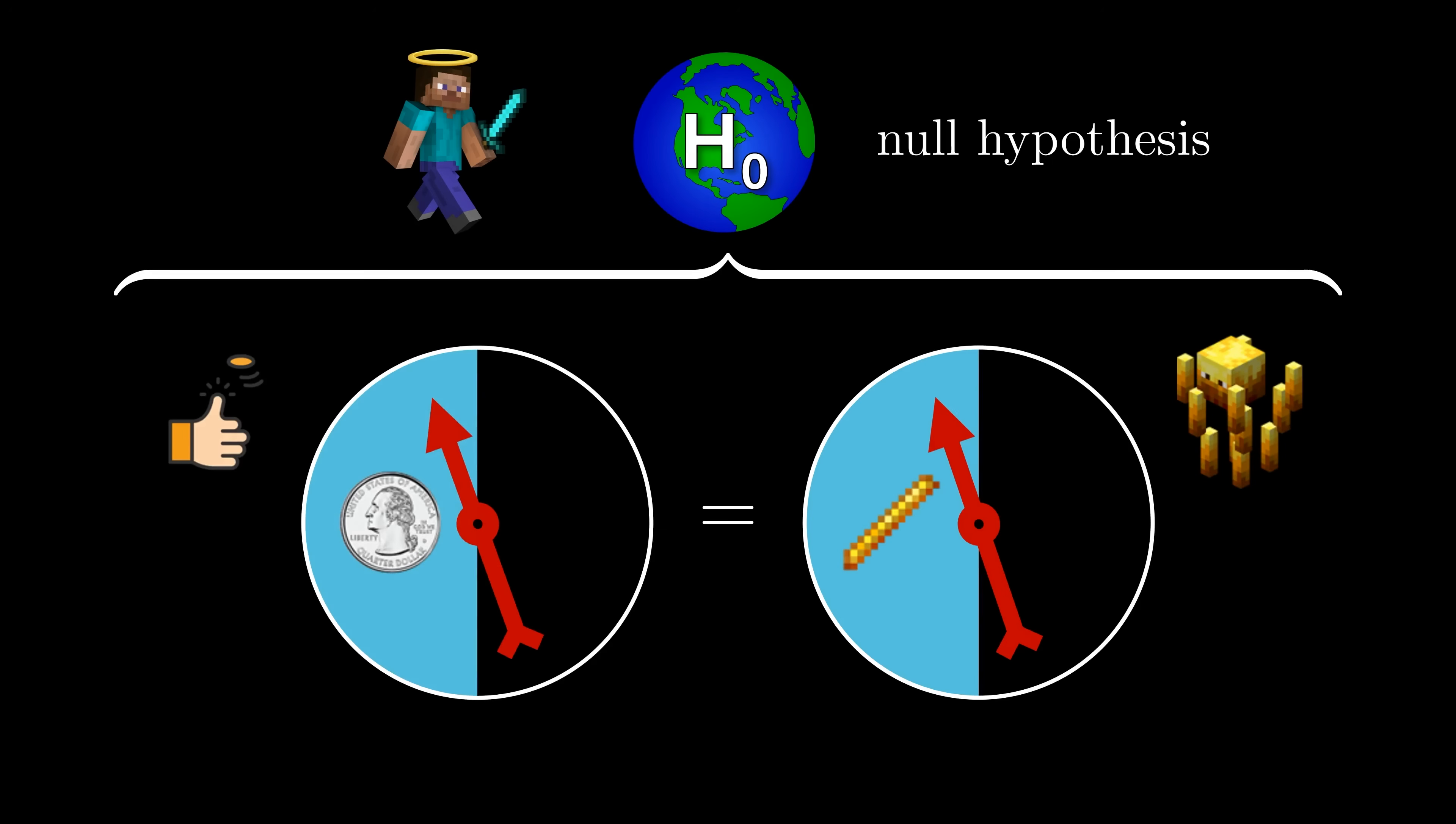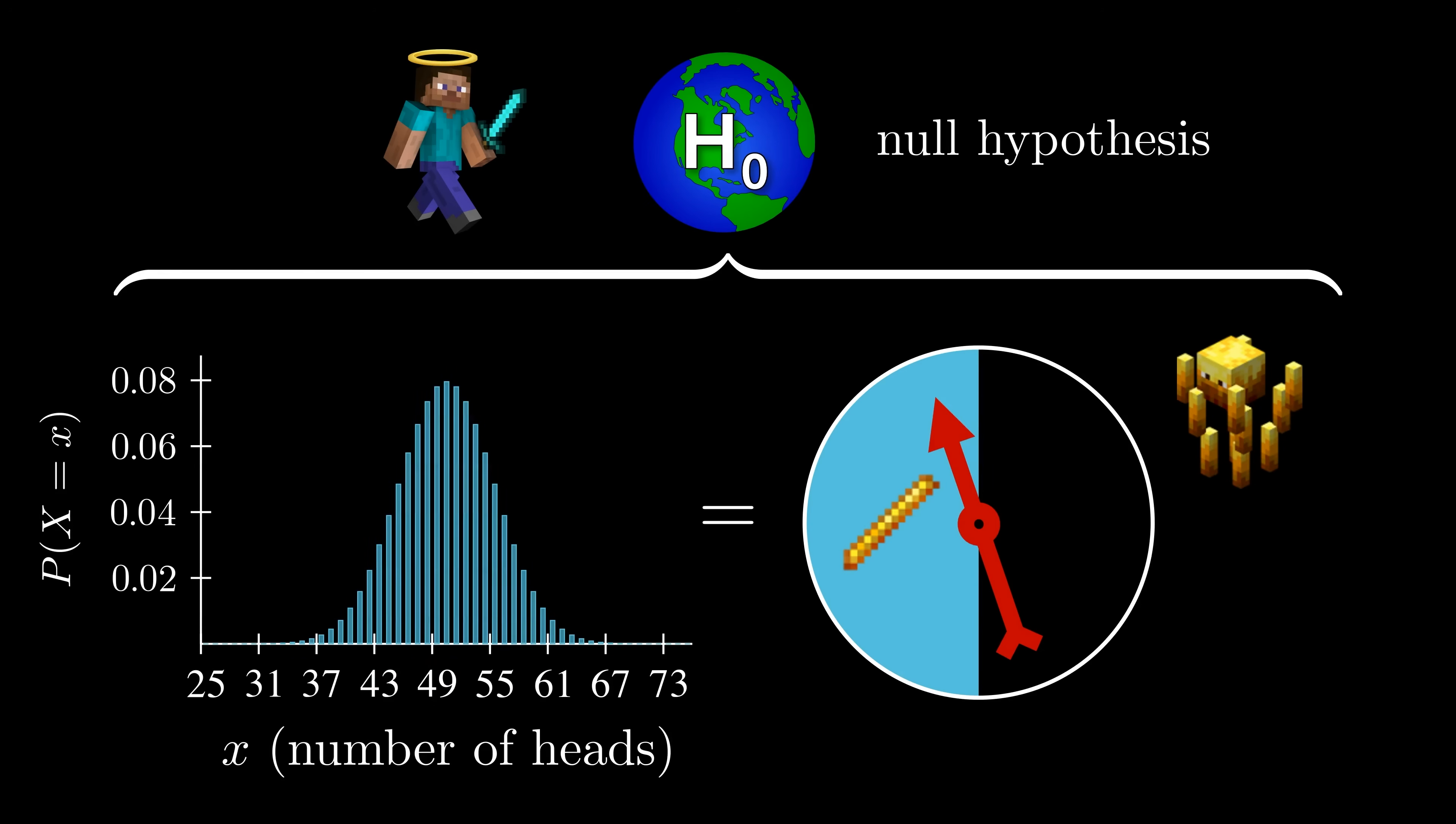Remember that under the null hypothesis, each blaze has exactly a 50% chance of dropping a rod when killed. So in the null world, killing n blazes and collecting x rods has exactly the same probability as flipping n fair coins and getting x heads, which we can find using this binomial probability distribution.